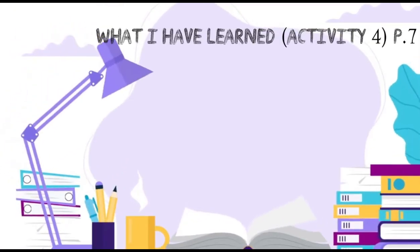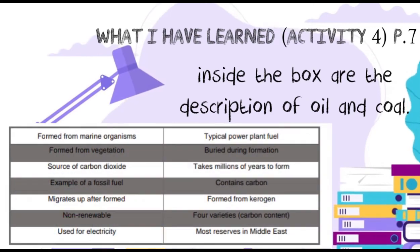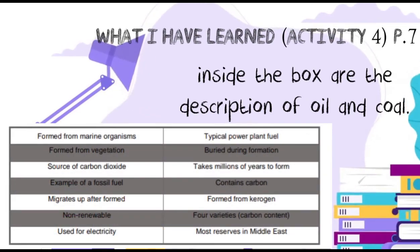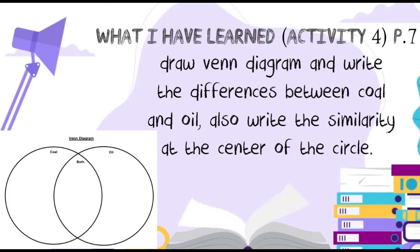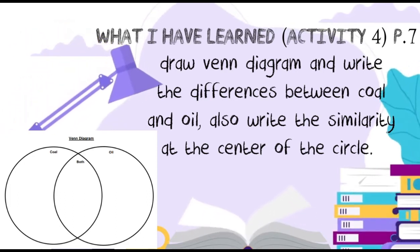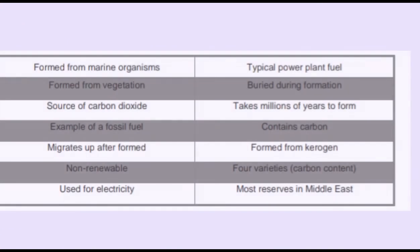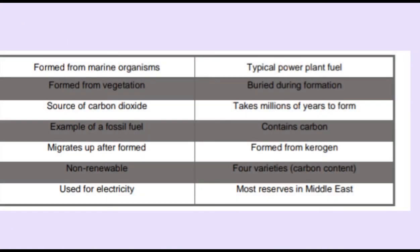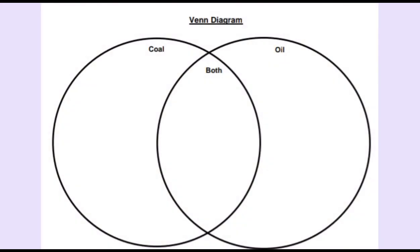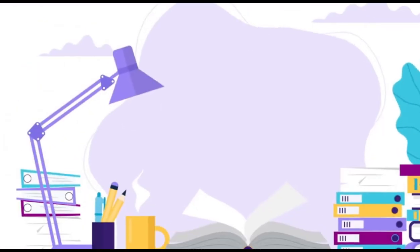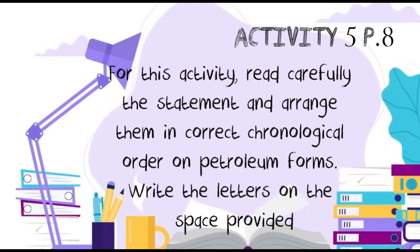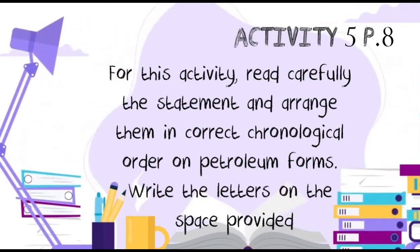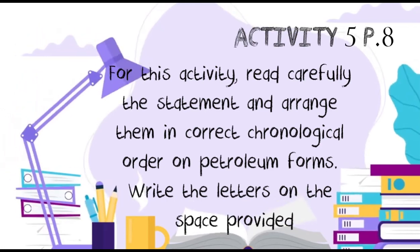What I Have Learned, Activity 4 on page 7. For this activity, inside the box are descriptions of Coal and Oil. Draw a Venn diagram and write the differences between Coal and Oil, and also write the similarities at the center. Good luck learners! Activity 5 on page 8 — read carefully the statements and arrange them in chronological order on how petroleum forms. Write the letters on the space provided. Good luck learners!